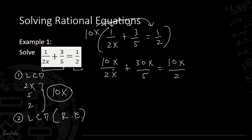Now we simplify. 10 divided by 2 gives us 5, and we cancel x since the x's cancel each other. Plus 30 divided by 5 gives us 6, and we copy x since there's no x in that denominator. Equals 10 divided by 2, which is 5, then copy x.